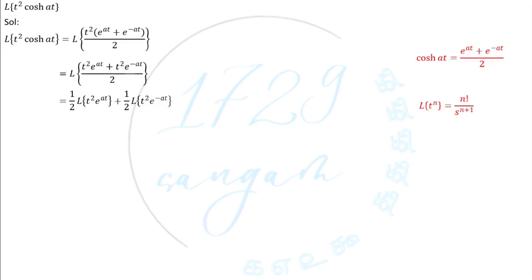Also, we have to find t squared e power at. Now we know that t squared Laplace transformation is equal to 2 by s cube.